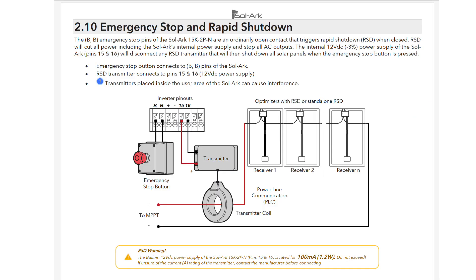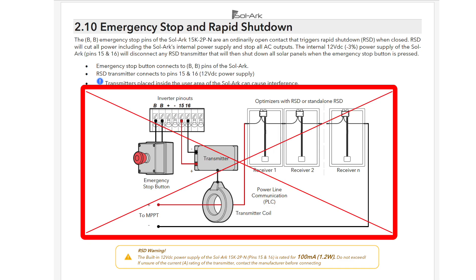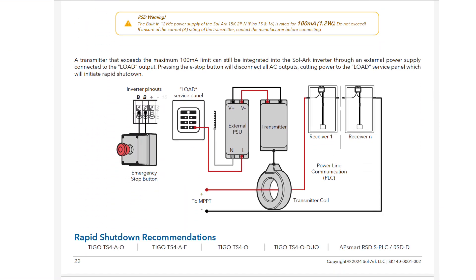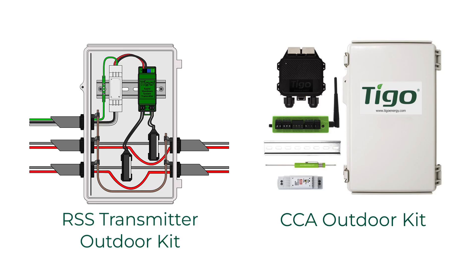Solark provides two methods for using a rapid shutdown transmitter with their pins. When using Tigo products, you must use the second method shown here and not rely on the Solark internal 12-volt RS-D pins. Tigo supplies complete kits for both communication products, which are available at your local distributor.